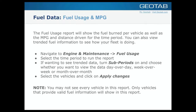We have a fuel usage report in MyGeotab that shows the fuel burned per vehicle for the time period you choose, as well as the MPG and distance driven. You can also view trended fuel information — week over week, day over day. Note that you may not see every vehicle you selected in the report; only vehicles that provide valid fuel information will appear, because we would rather show valid data than no data or bad data.